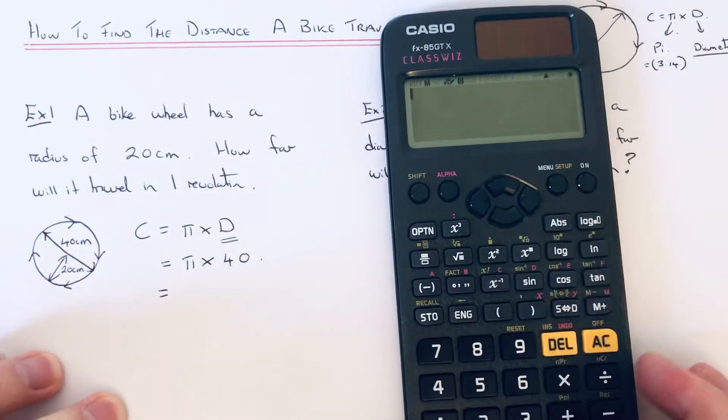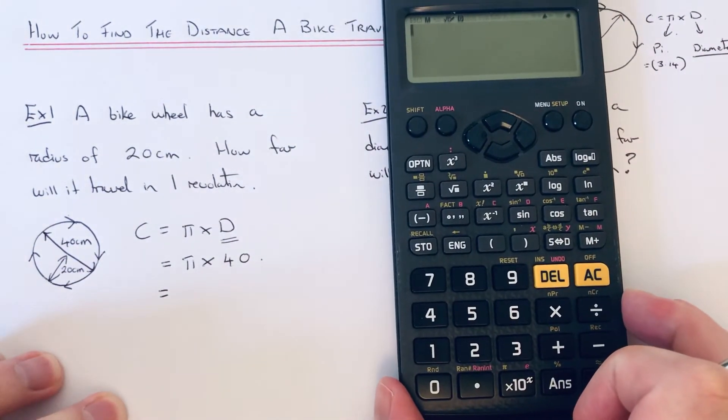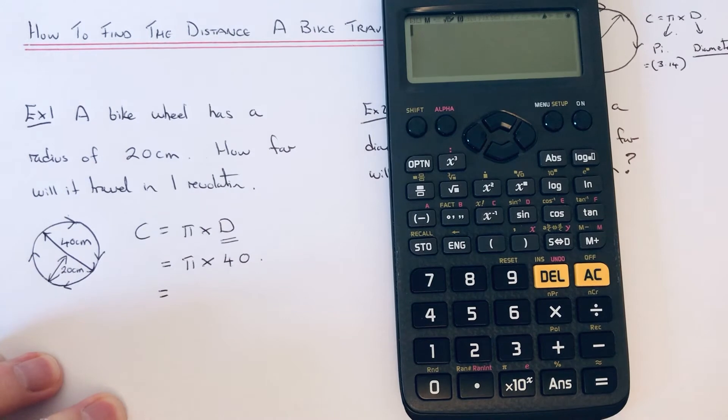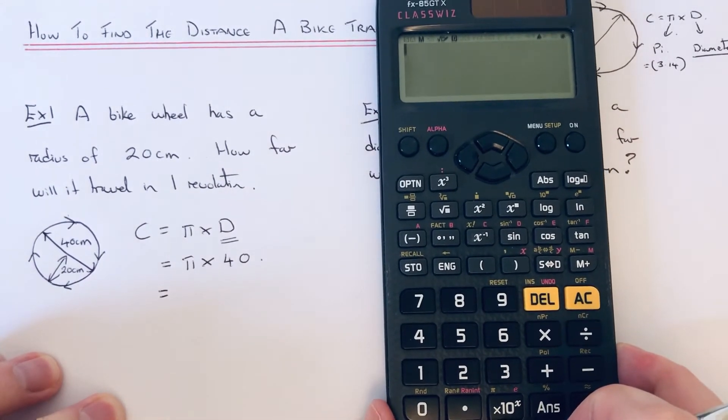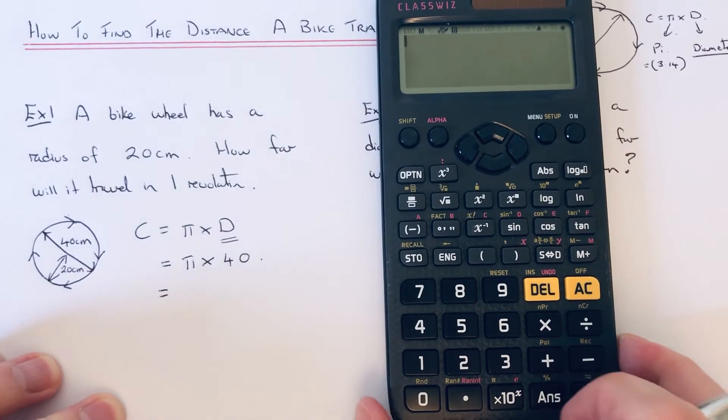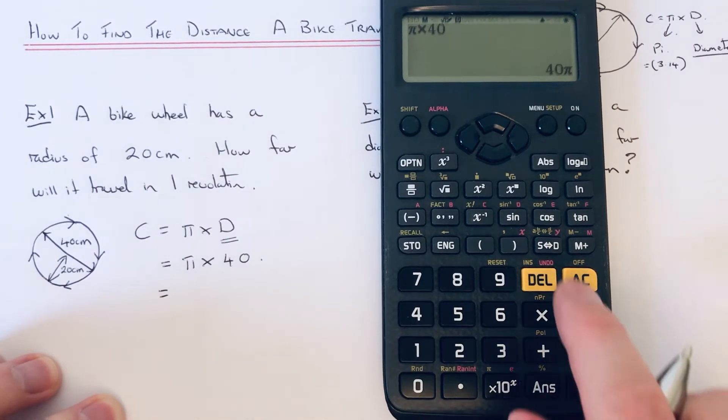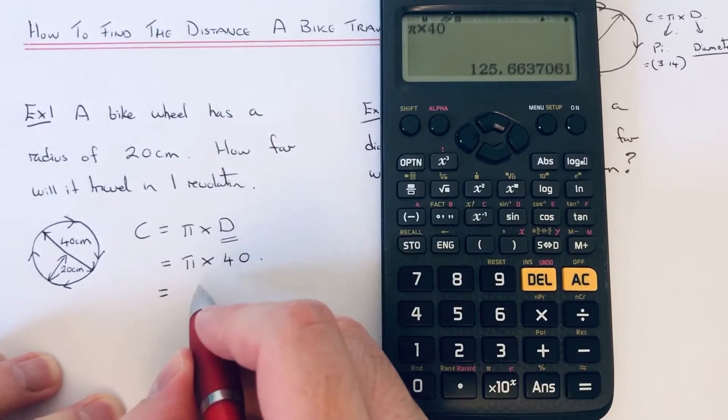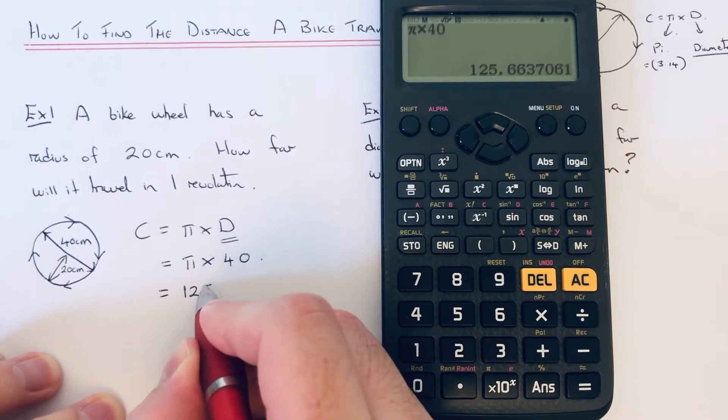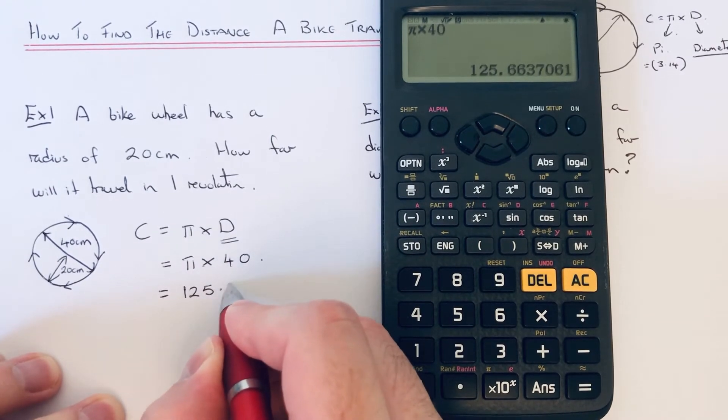If you've got a scientific calculator, use your pi key because it's going to come out more precise. If you haven't got a scientific calculator, use 3.14. So shift pi times 40, let's do it. If you do it to 1 decimal place, you get 125.7